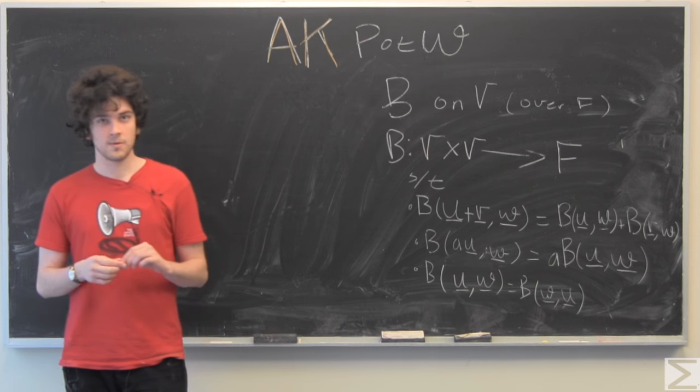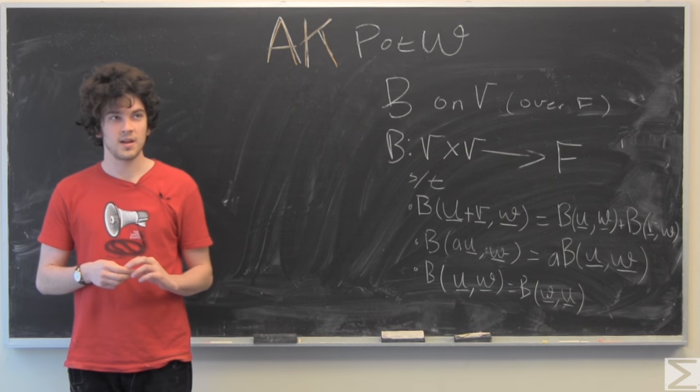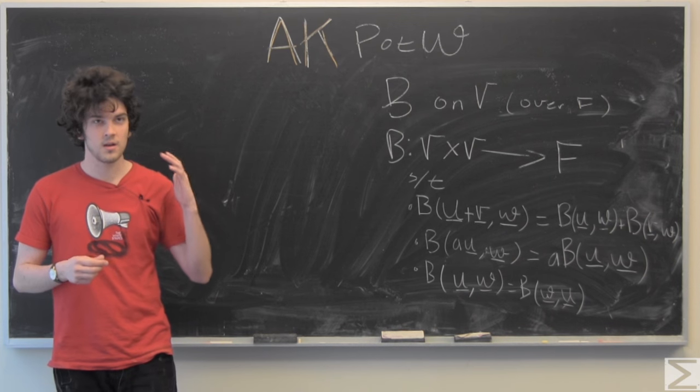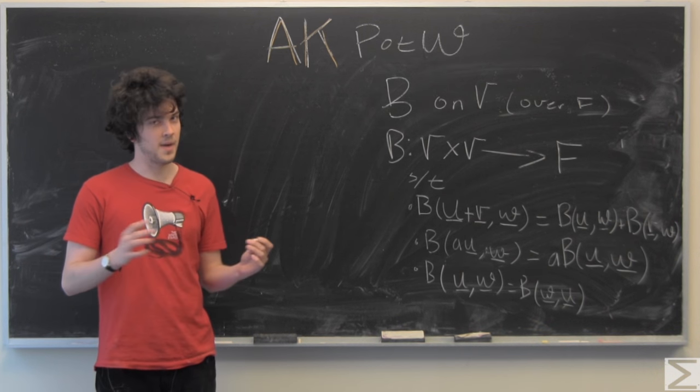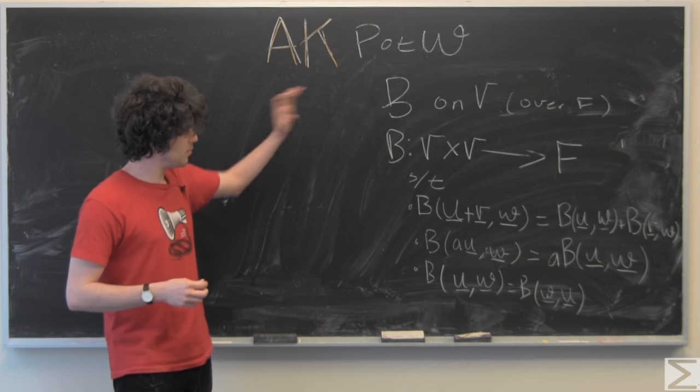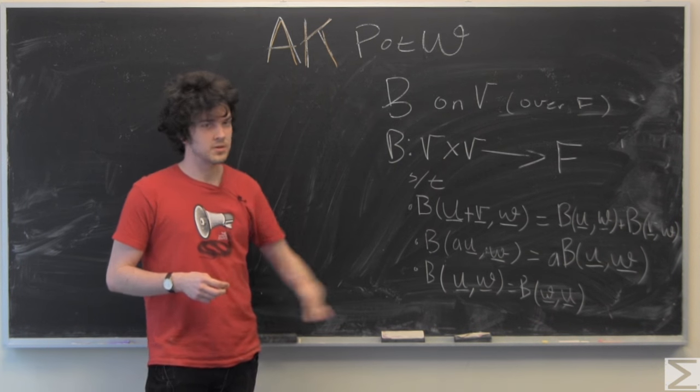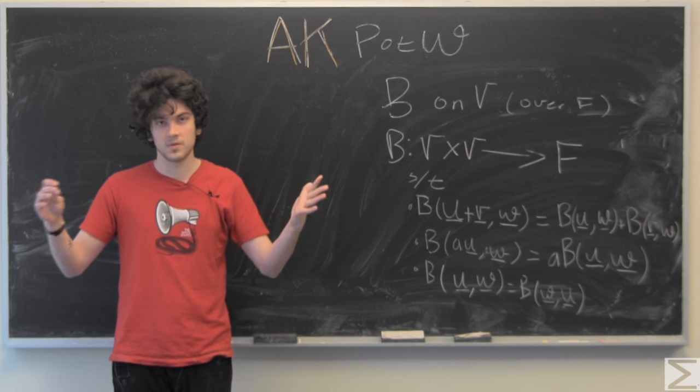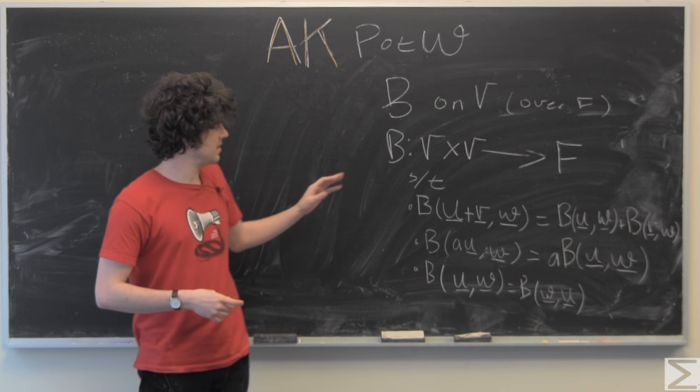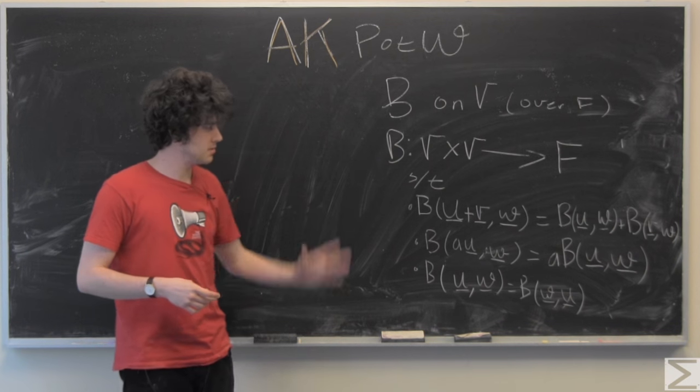If you don't know what a bilinear form is and you clicked on this video to find out, I'll tell you what it is and you can get to work on the problem and then come back to the video. So a bilinear form B on V, which is a vector field over some field F, takes two variables in V to F.